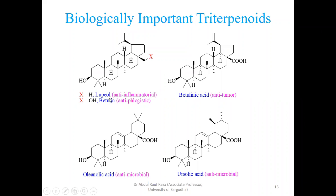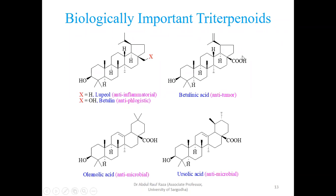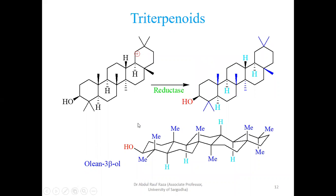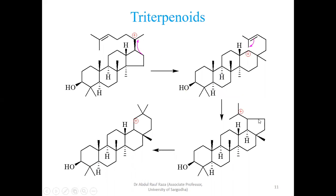So: lupeol → hydroxylation at one methyl gives betulin, a different compound. Betulin undergoes two further oxidation steps to give betulinic acid. Now look at oleanolic acid. In this, the five-membered ring is converted into a six-membered ring by a sigma bond transfer — if the sigma bond transfers from one carbon to another, the five-membered ring becomes a six-membered ring.